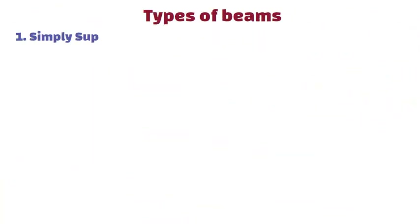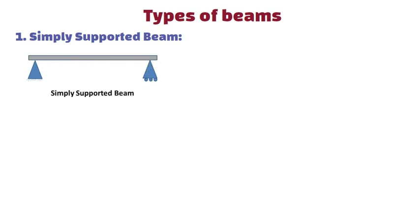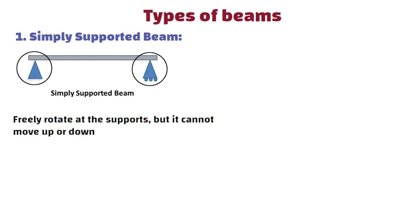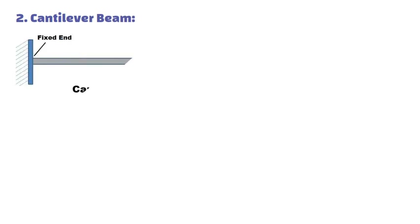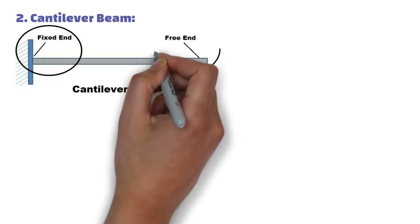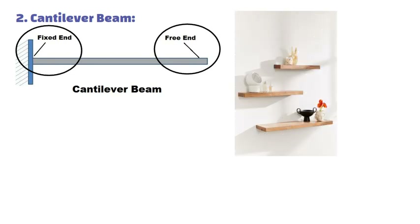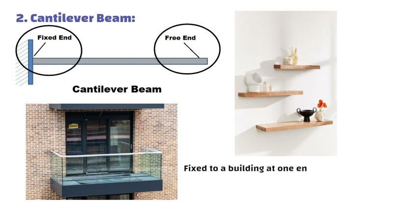Types of Beams. 1. Simply Supported Beam: This beam is supported at both ends. It can freely rotate at the supports, but it cannot move up or down. Example: a beam placed across two walls. 2. Cantilever Beam: One end of the beam is fixed and the other end is free. It looks like a shelf that is attached at one end but has no support at the other end. Example: a balcony that is fixed to a building at one end but has no support on the other side.